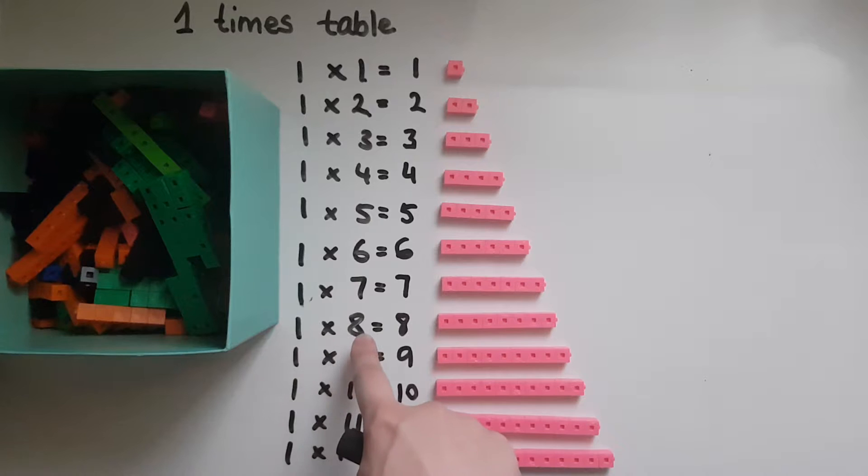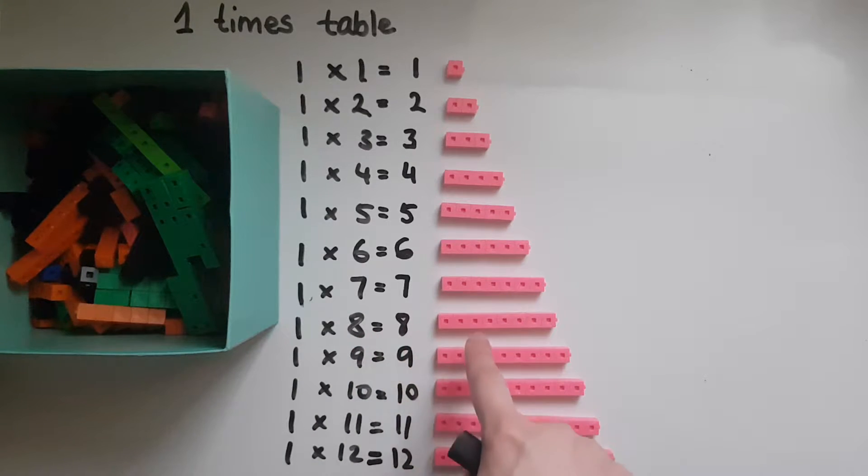If I go once and get eight items, I'll bring home eight. So one times nine gives us nine, one times ten gives us ten, one times eleven gives us eleven, one times twelve equals twelve.